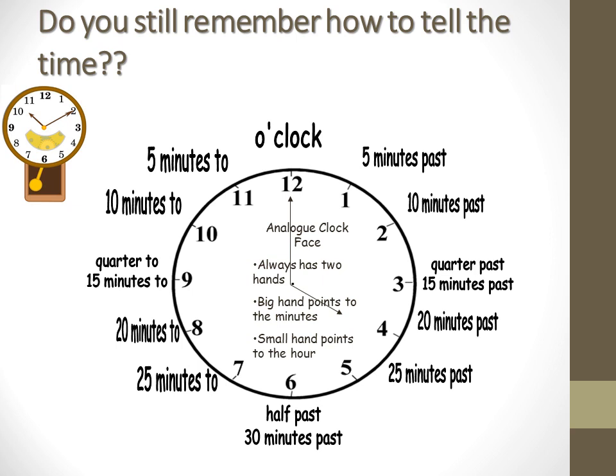Let's take one more example. If the minute hand is on 11 and the hour hand is tilting away from seven and going towards eight, what do we say the time is? The time is five minutes to — and since the hour hand has left seven and is going towards eight, it's five minutes to eight. Yeah, I know you know that already — okay, so we move on to the next part.